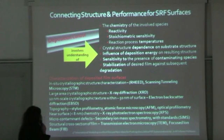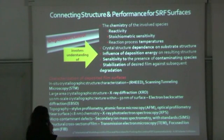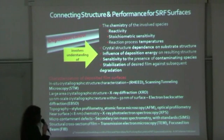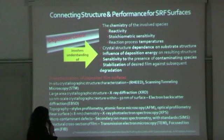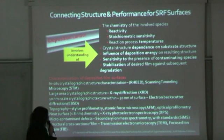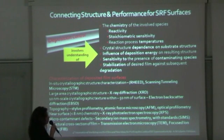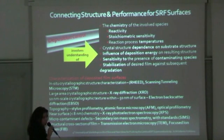To connect the structure and performance of SRF surfaces, many aspects are involved. For example, the chemistry of the involved species can affect film quality in terms of reactivity and stoichiometry, especially for compounds. The reaction process temperature plays a big role in film quality. And of course, the substrate is a crucial part of the process — you need a good knowledge of your process to prepare it adequately for the film properties you want to achieve.